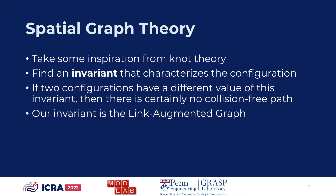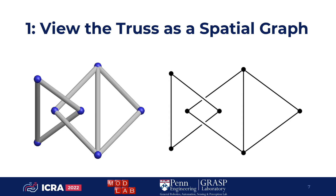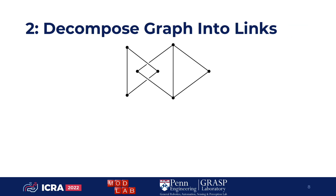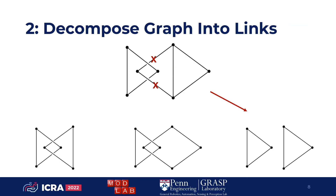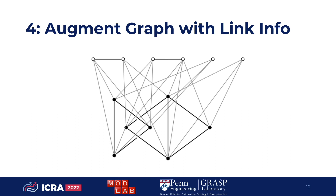Our approach is to take some inspiration from knot theory and find an invariant of the truss robot. An invariant is some abstract mathematical quantity you can evaluate for a given robot configuration. It has the property that if you make any collision-free robot motion, it doesn't change the value of the invariant. The invariant we developed is what we call the Link Augmented Graph. First we view the truss robot as a spatial graph, which is the generalization of knots and links. This means we no longer care about the precise locations of each point, rather we only care about how the edges pass over and under each other. We take that spatial graph and find every subgraph that corresponds to a link diagram, then analyze each link diagram to see if and how it's linked, and store each result as a graph. Finally, we combine those graphs with the original graph to create the link-augmented graph.